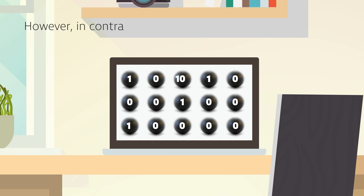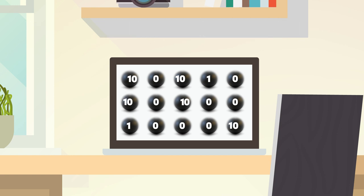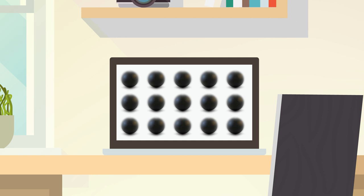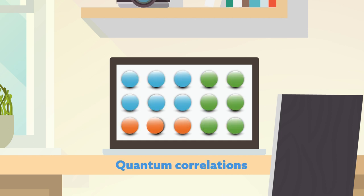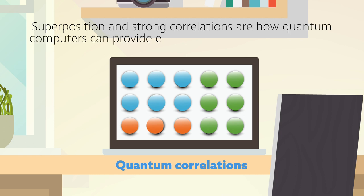However, in contrast to bits, qubits can exist in the form of superposition of logical values 0 and 1. This means we can encode much more information in a qubit. Within a collection of qubits, superposition also leads to quantum correlations among qubits, which are stronger than correlations within a collection of bits. Superposition and strong correlations are how quantum computers can provide extremely fast processing speeds.